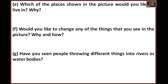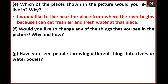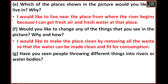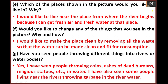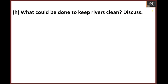Which of the places shown in the picture would you like to live, and why? You can write where you would like to live — it can be a place where you get fresh air and fresh water. Next question: what would you like to change about the things you see in the picture? You can remove the waste so that the water will be clean and fit for consumption. Have you seen people throwing different things into the river or water bodies? Yes — you can see coins, ashes of dead humans, religious statues in water, and people also throw garbage into the river.